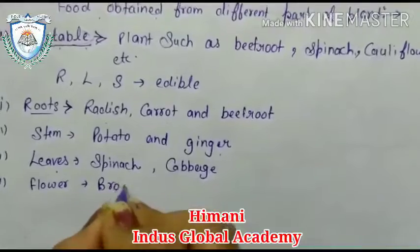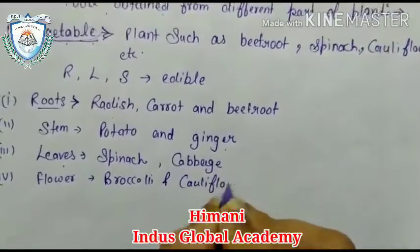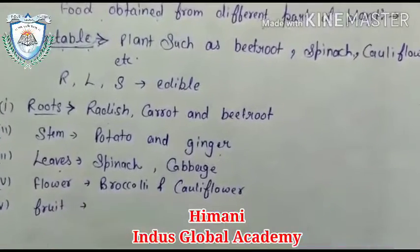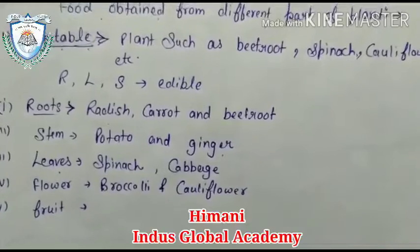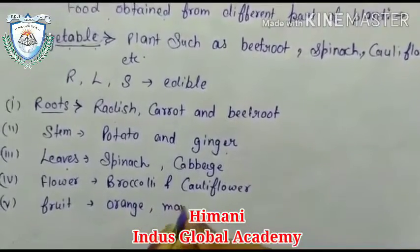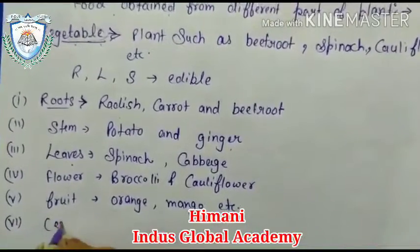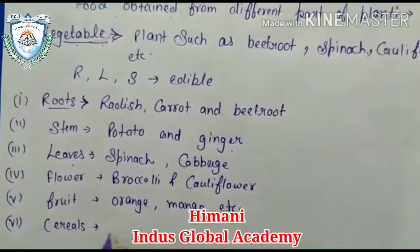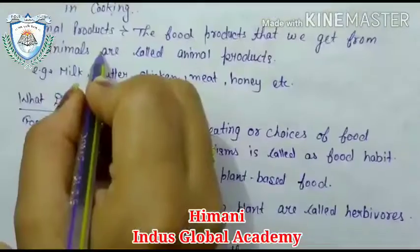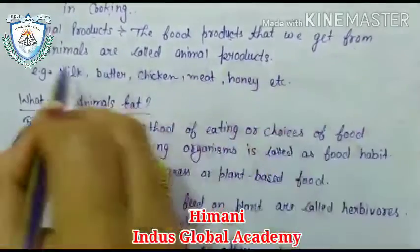An example of flower as food is broccoli and cauliflower. Fifth is fruit — fruits are a healthy source of food from the plant, for example orange, mango, etc. After that, cereals like wheat and rice.